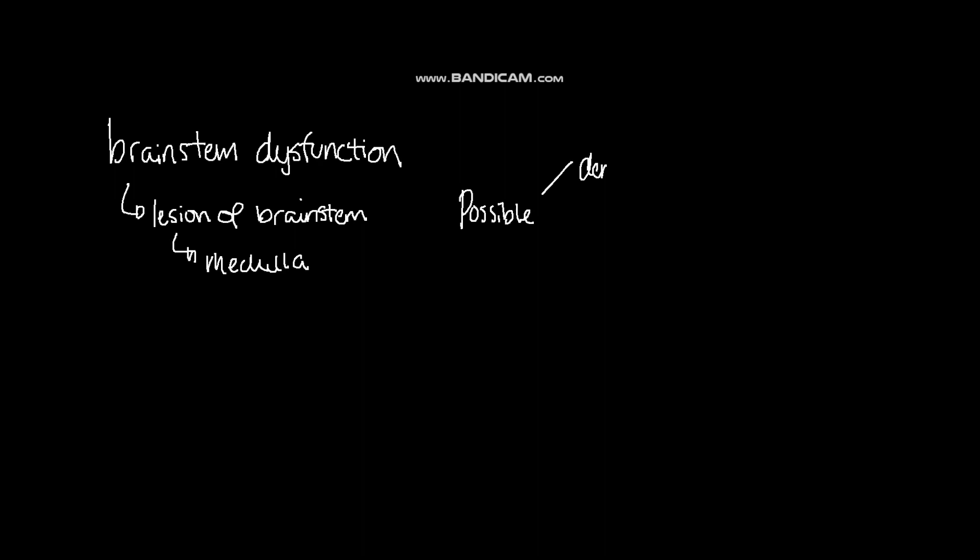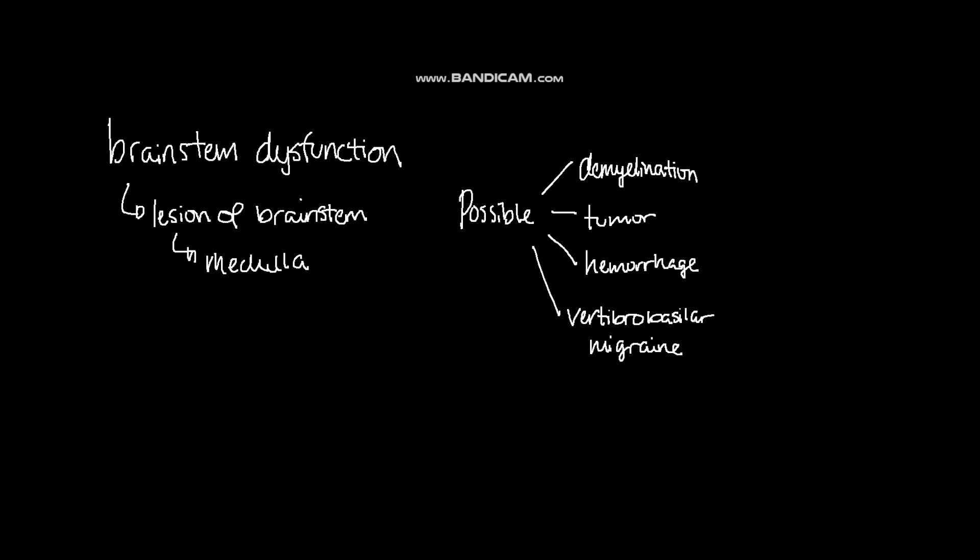Given that the occurrence of symptoms many years prior may be indicative of brain stem dysfunction, the most likely diagnosis is a chronic or recurrent lesion of the brain stem, especially the medulla. Some possibilities include demyelination, a low-grade tumor, small recurrent hemorrhage in an arteriovenous malformation or cavernous angioma, and finally, a vertebral basilar migraine.